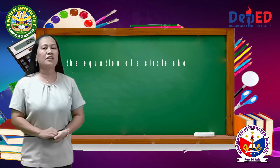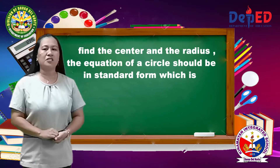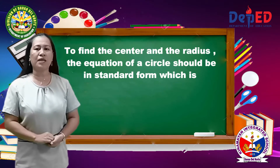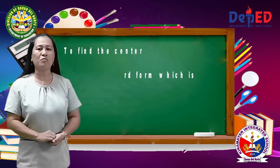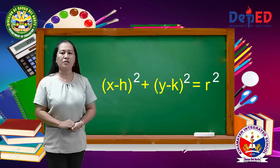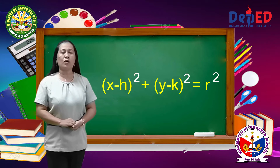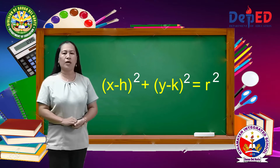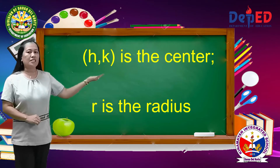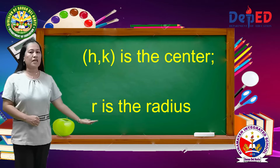To find the center and the radius, the equation of a circle should be in standard form, which is: quantity x minus h squared plus quantity y minus k squared equals r squared, where (h, k) is the center and r is the radius.